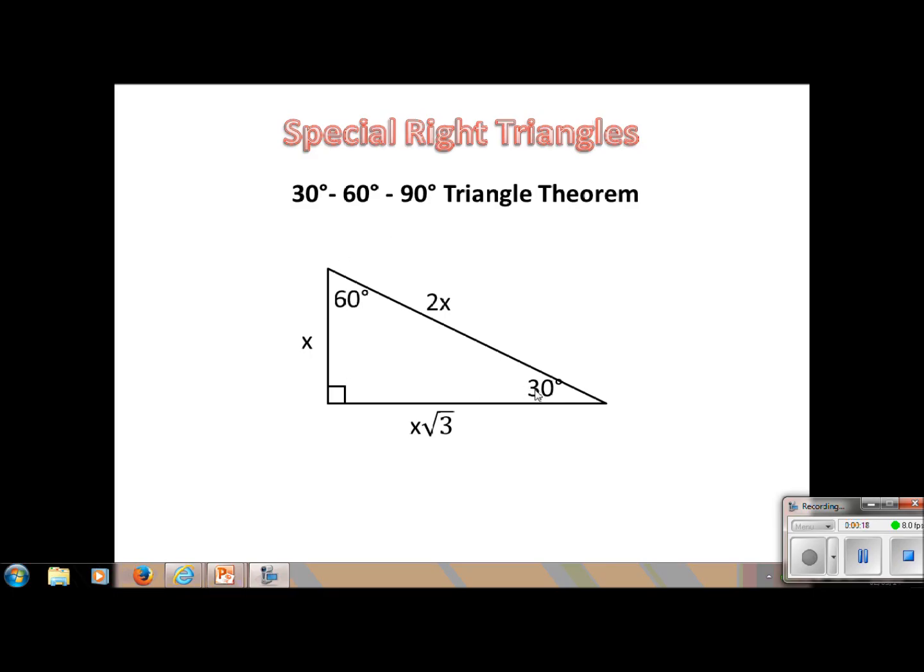And if we have a triangle that's a 30-60-90, the sides always have this relationship right here. And please have a note card or write these down on a piece of paper because I actually want you to have this memorized for your video quiz.